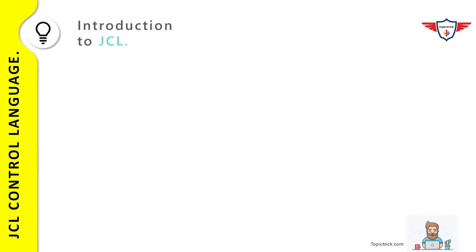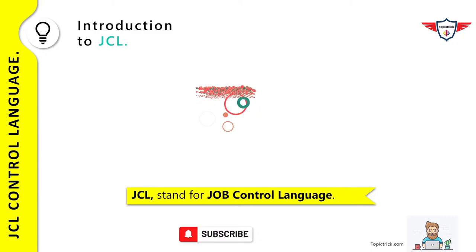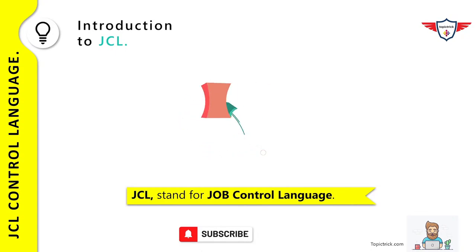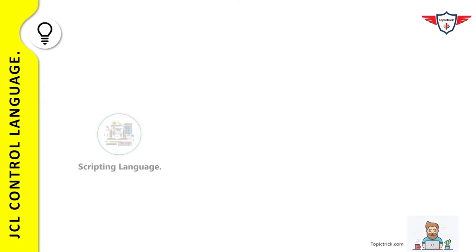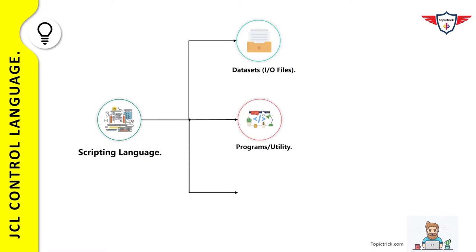The term JCL stands for Job Control Language, and it is primarily used on the IBM mainframe to convey information to the ZOS operating system through a set of statements called Job Control Statements. JCL is a scripting language — in fact, it is one of the oldest and most robust scripting languages. Precisely, the purpose of JCL is to provide information related to the program, data set, and the input-output devices to be used during the execution of a job.